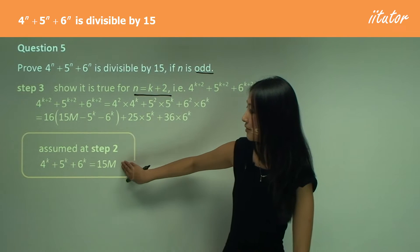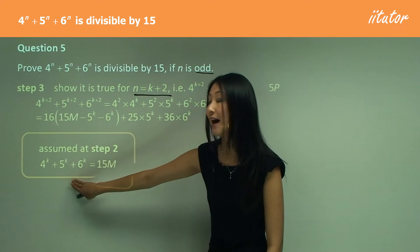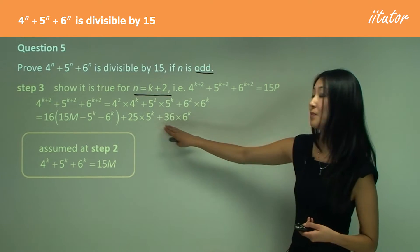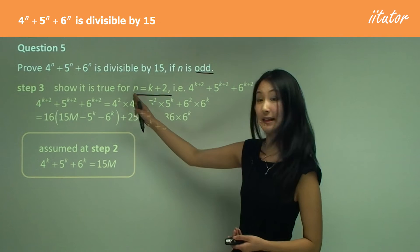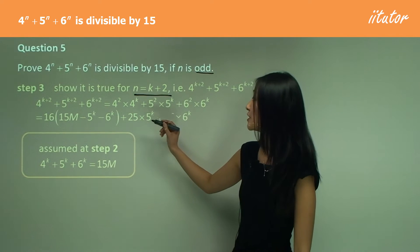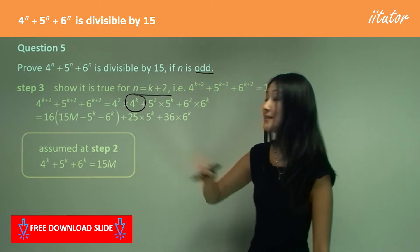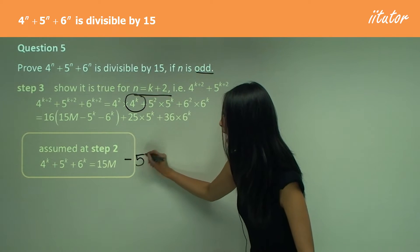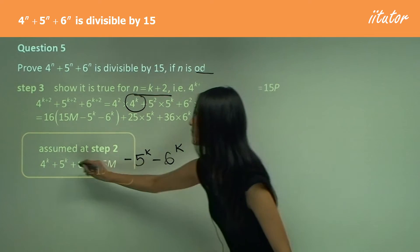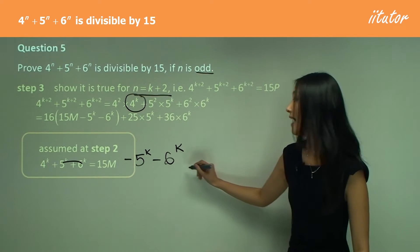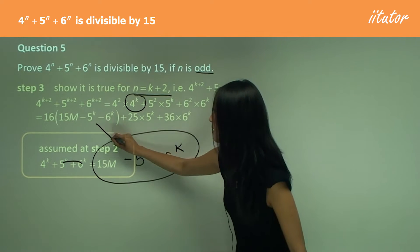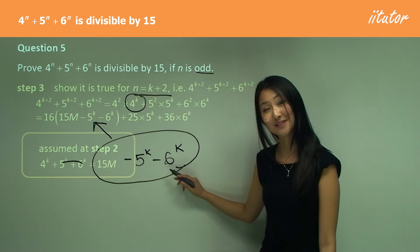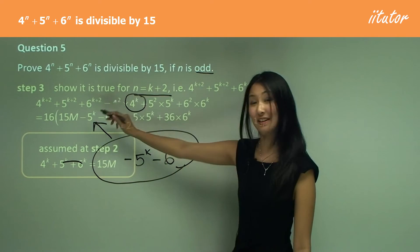We assumed in step 2 that 4 to the power of k plus 5 to the power of k plus 6 to the power of k equals 15m. We have to substitute this in somehow. We've chosen 4 to the power of k for simplicity. So I've subtracted 5 to the power of k and 6 to the power of k over to this side and substituted this in for the 4 to the power of k.